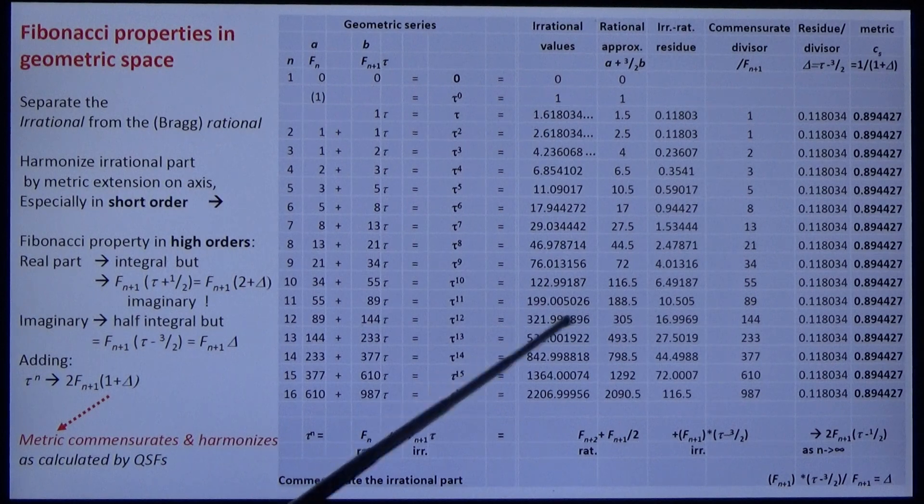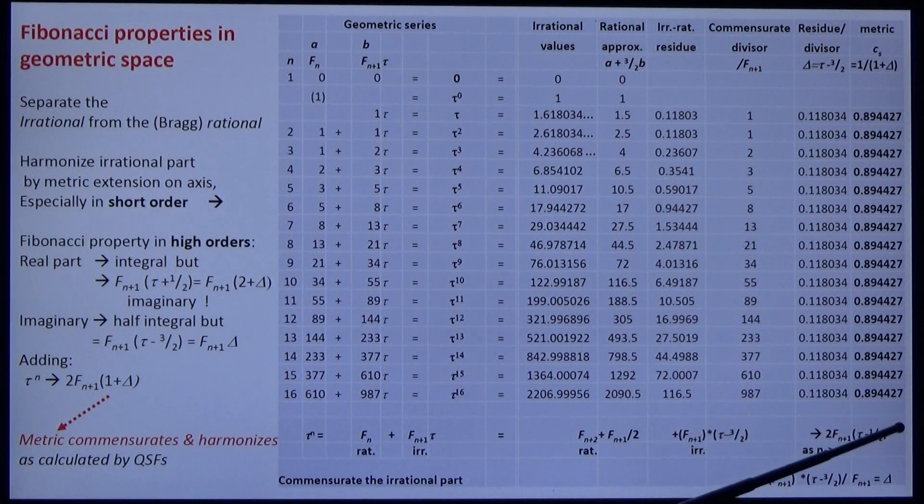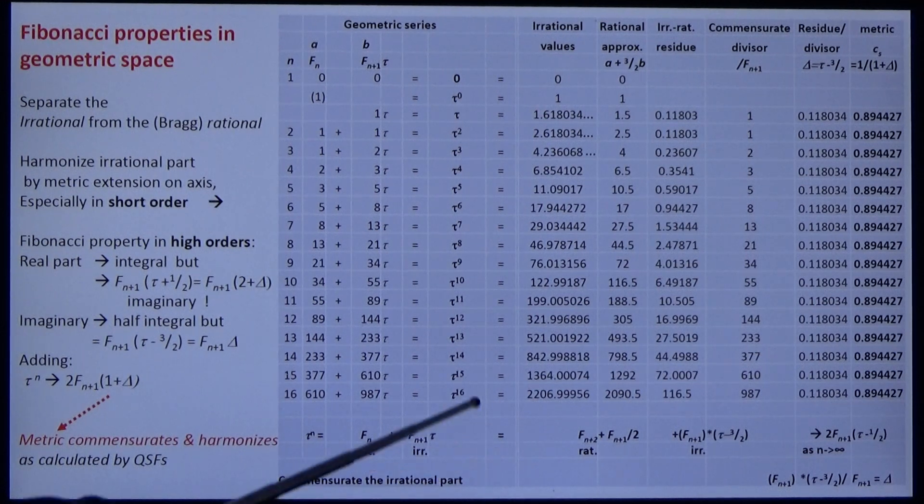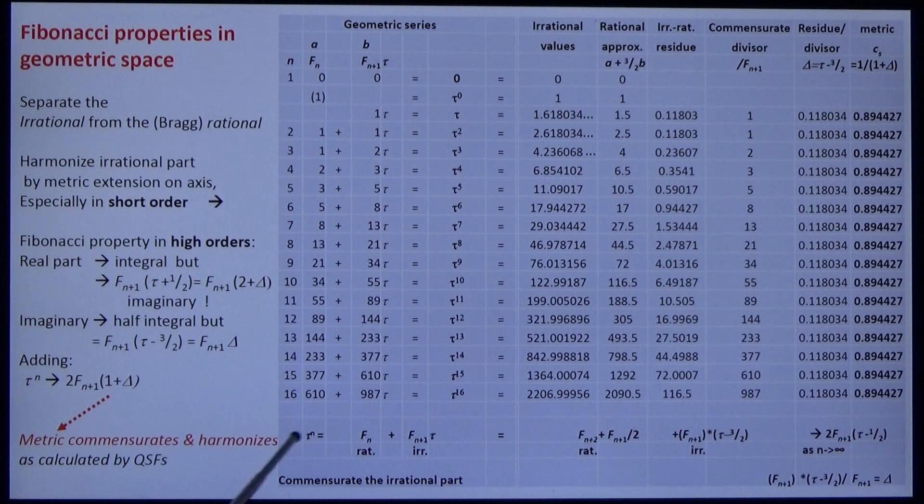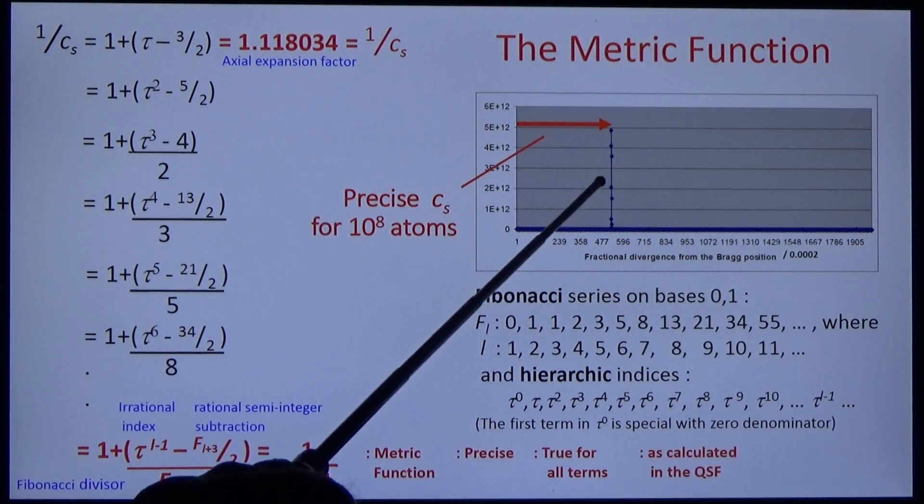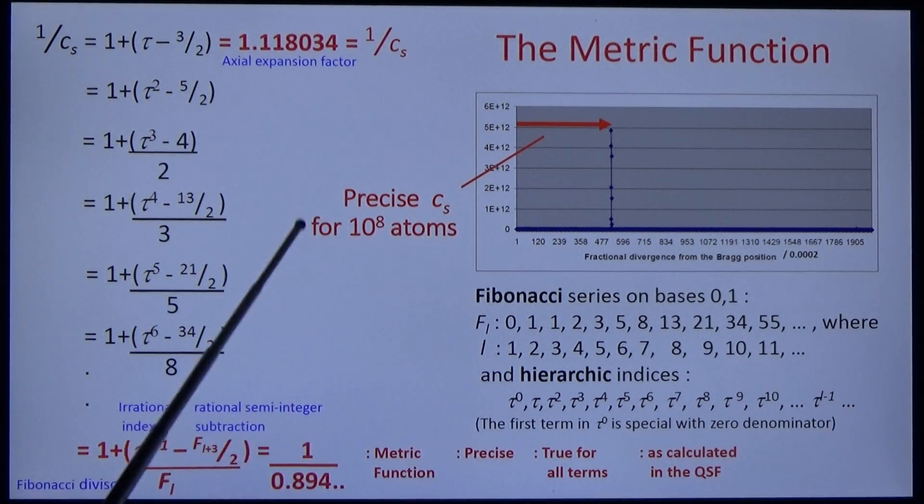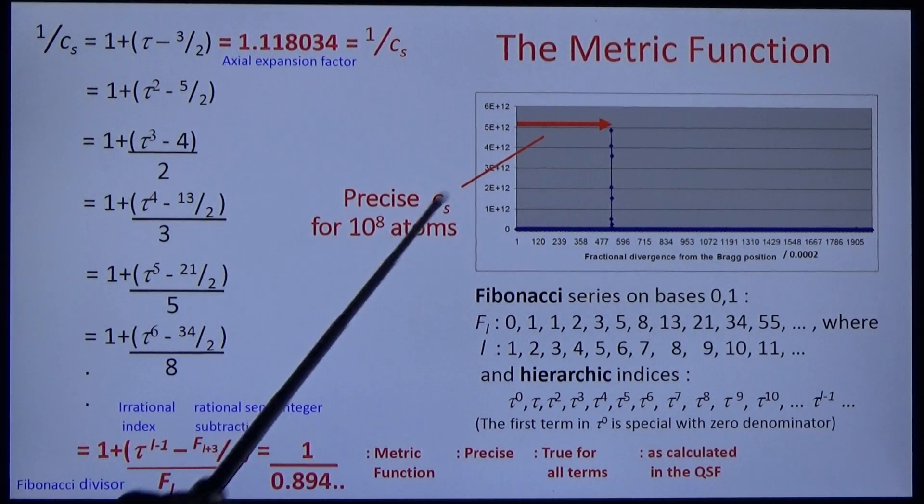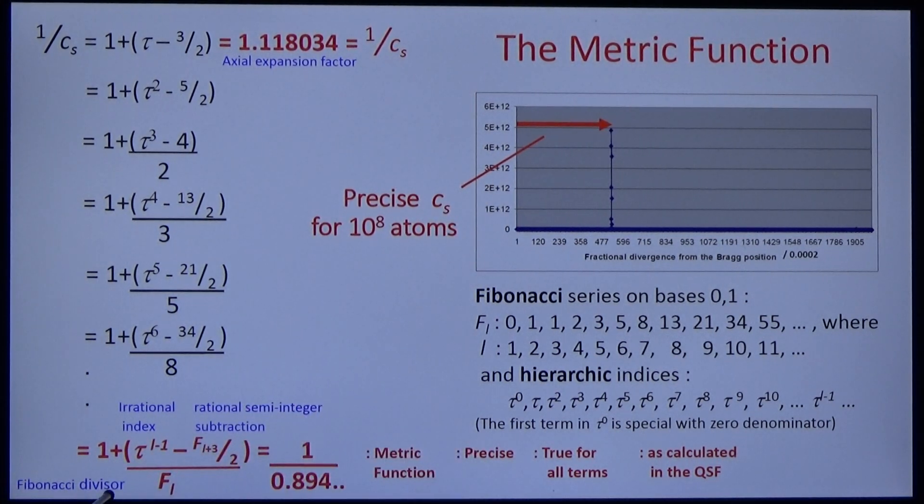Subtract the rational part, normalize it, and invert it, and you've got the metric. It's the same for all terms in the geometric series. You can derive this in several ways. One of them is given at the bottom. And notice also that CS is extremely precise in sufficiently large crystals. And the metric function is given here for the first time. It consists in a rational subtraction from the rational index and invert it.